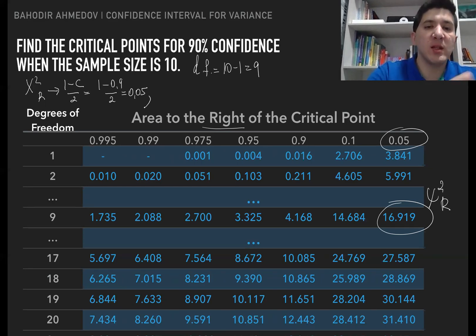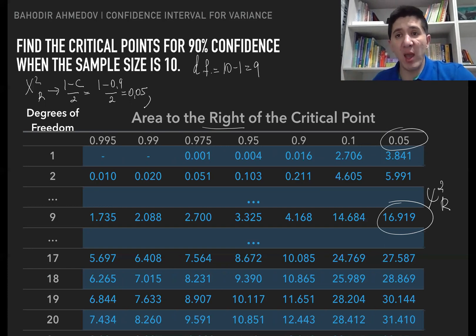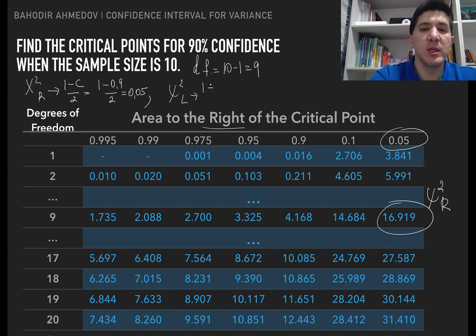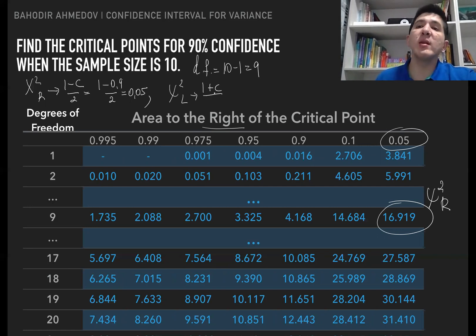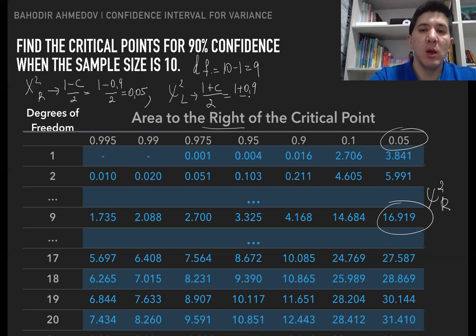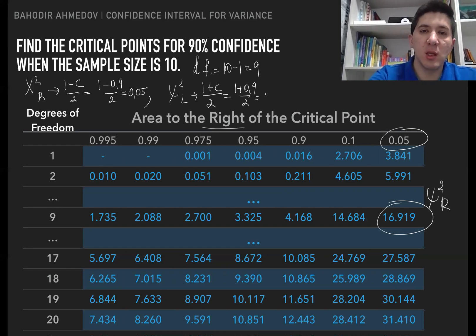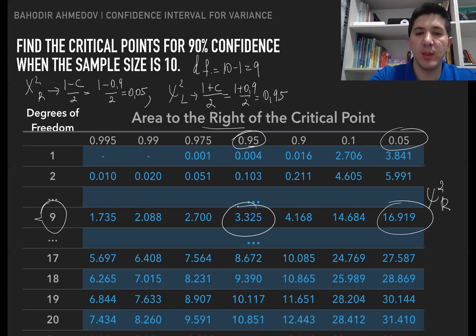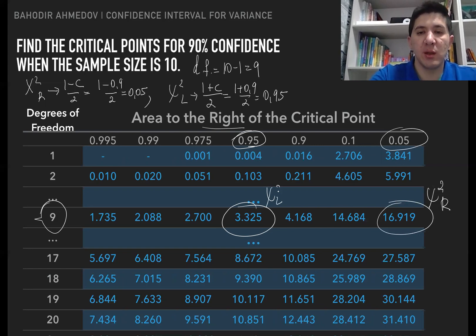To find the left critical point, the area to the right of that point must equal (1 plus C) over 2, which is (1 plus 0.9) over 2 equals 0.95. Going to the table at degrees of freedom 9 and area 0.95, the left critical point is 3.325. Once we've found both critical points depending on degrees of freedom and confidence level, we can construct the confidence interval for the population variance.